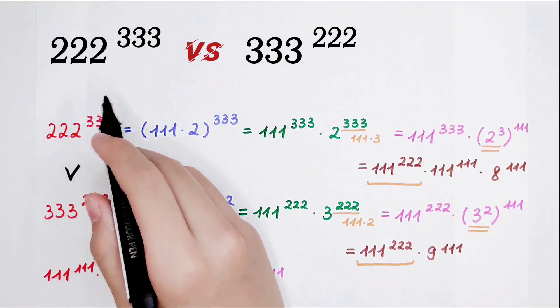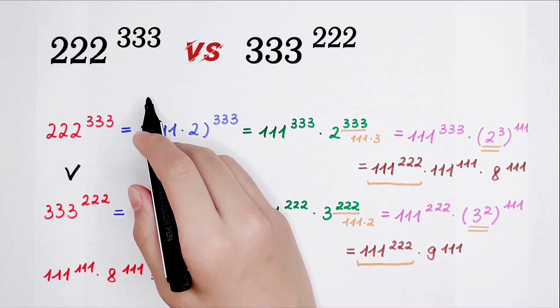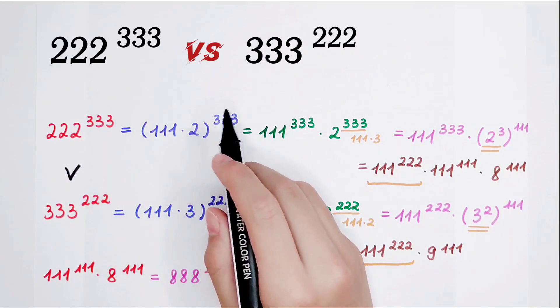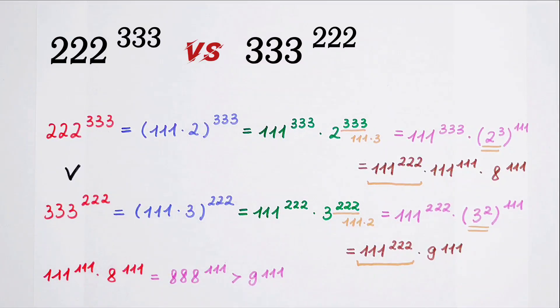Therefore, 222 to the power of 333 is larger than 333 to the power of 222.